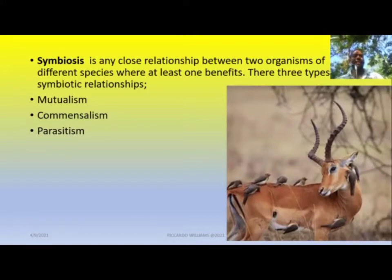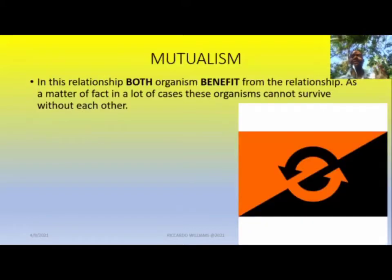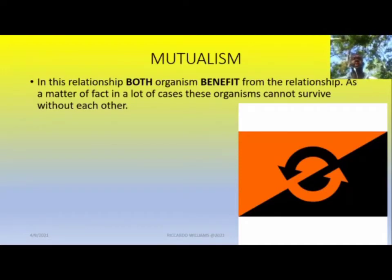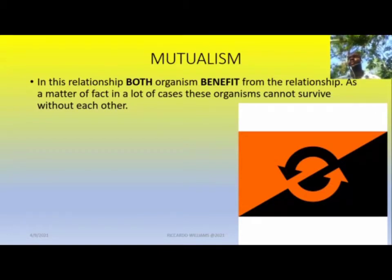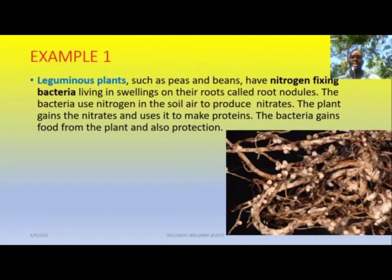There are three types: we have mutualism, commensalism, and parasitism. Let's look at mutualism first. In this relationship, both organisms benefit. As a matter of fact, in a lot of cases these organisms cannot even survive without each other — they are so dependent on each other that in many cases they don't survive if they don't have each other.